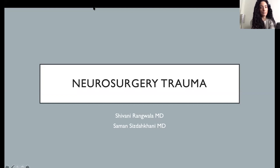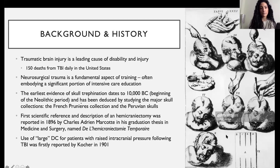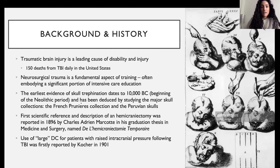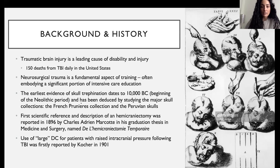I know you all come from different backgrounds, so we'll start from the basics with a little overview and history of traumatic brain injury, or TBI. It's a very common and significant cause of disability and death in the United States - there are actually 150 deaths from TBI daily, which is a shocking figure. It's a significant cause of healthcare costs and a fundamental aspect of our training.